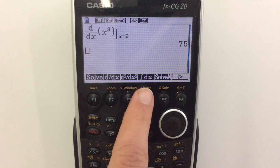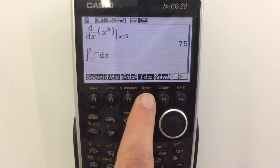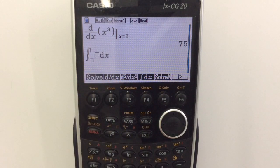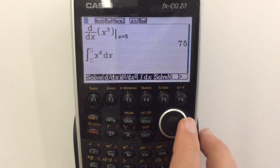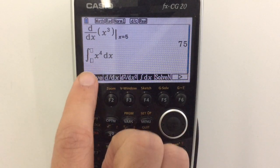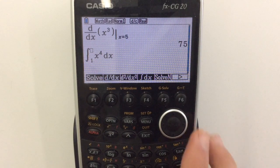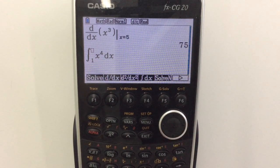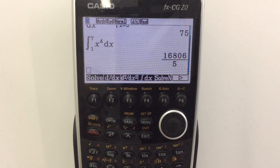Integrating is also very simple. Pressing this section here we get our standard integral setting that we would expect. Let's do something like x to the power of 4. I'm going to press right and right again and it brings us down to these. Let's do it between 1 and 7. And there's our value. I'm sure it's right.